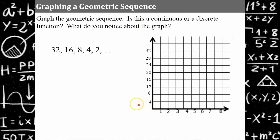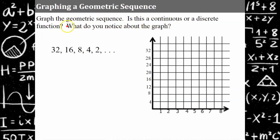Now let's talk about graphing a geometric sequence. Hopefully you've graphed an arithmetic sequence before. Graph this geometric sequence, identify whether it's a continuous or discrete function, and note what you observe about the graph. The terms are term 1 through term 5, so graph each as an ordered pair.